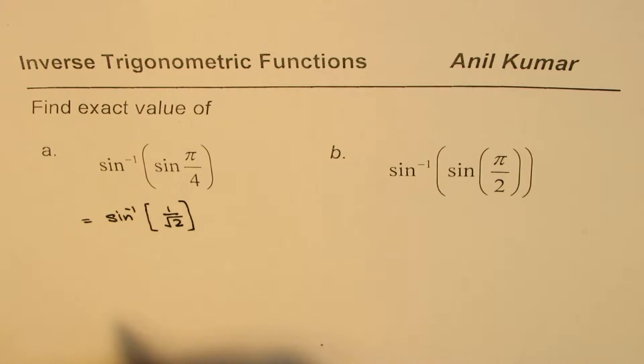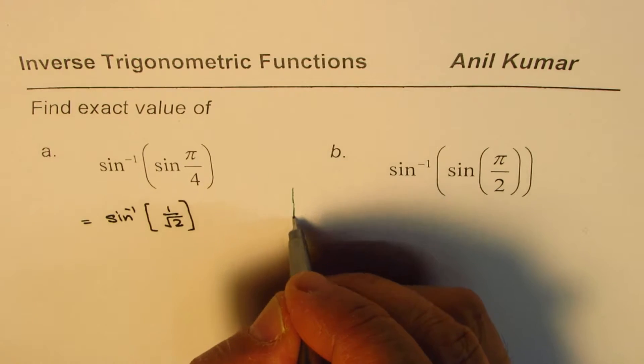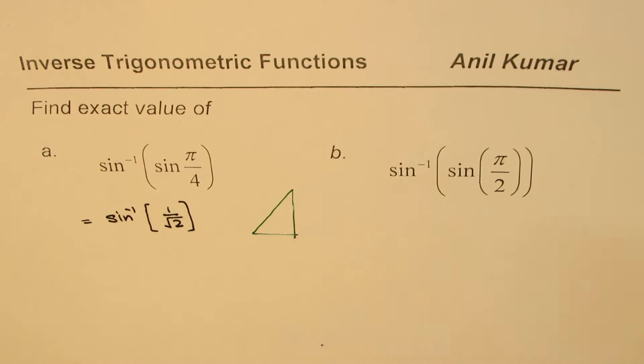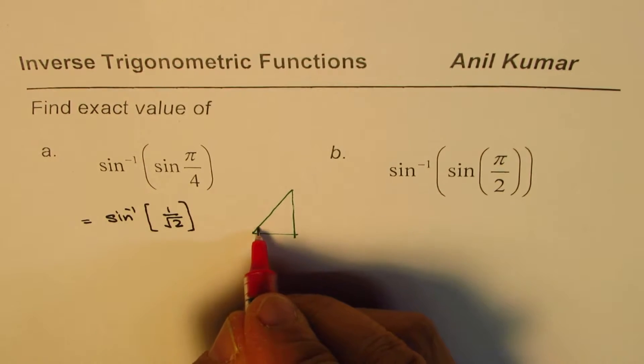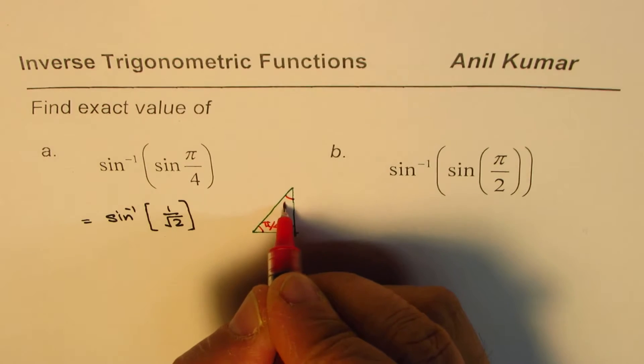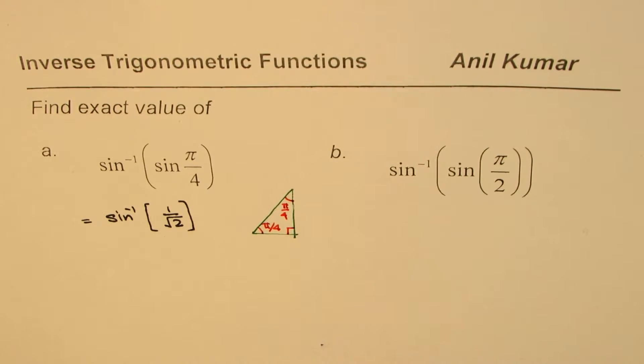I hope you remember the triangle. Let me make the special triangle here to recollect. In this triangle the angle is pi by 4, that is 45 degrees, this is also pi by 4, and the sides are 1, 1, square root 2.